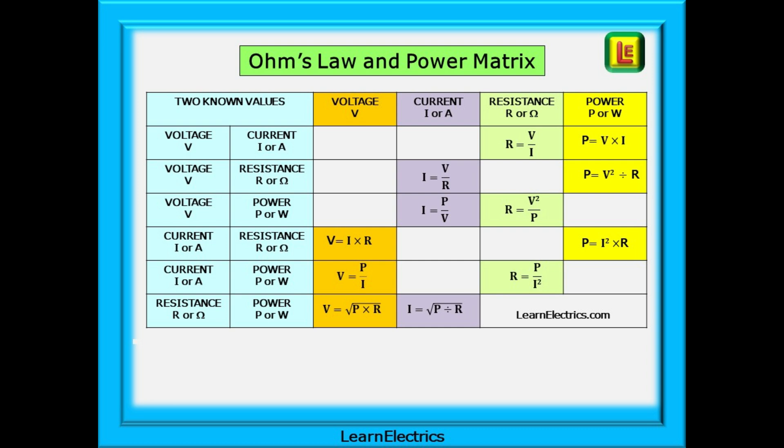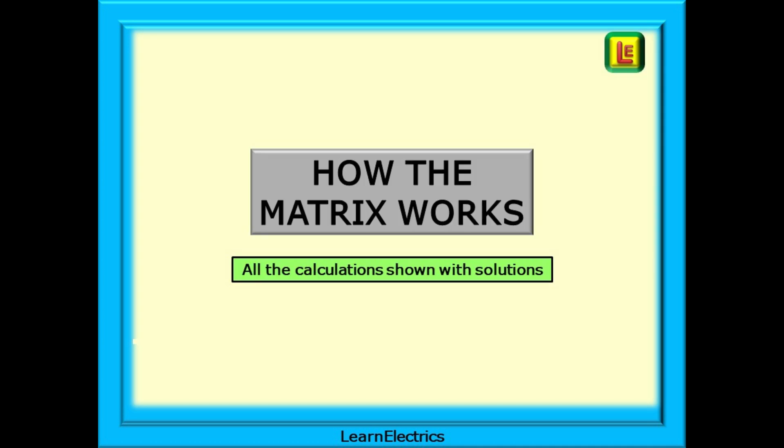Using the top row for instance, if we know the voltage and current, the matrix tells us how to calculate the resistance and the power and so on. Let's look at each section in detail now. We will do each calculation and show you the solutions. Pause the video where needed and follow the calculations. This is the best way to learn.